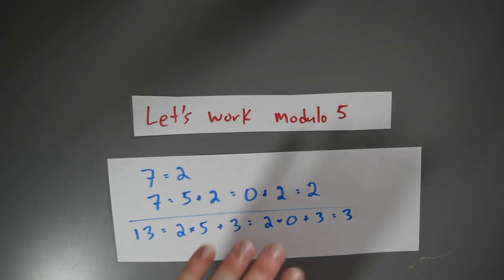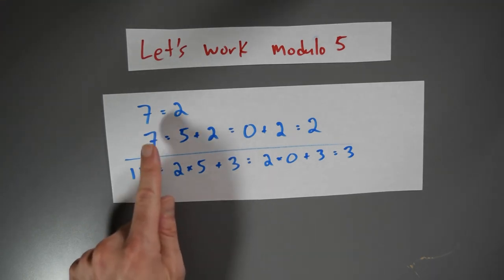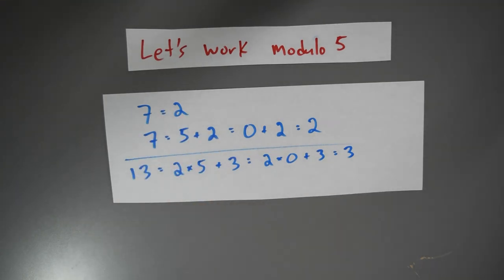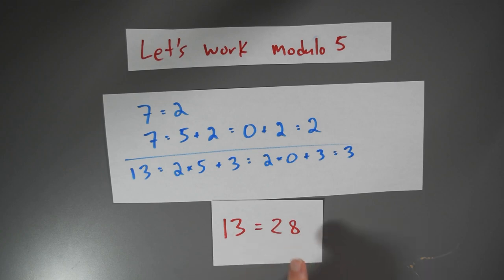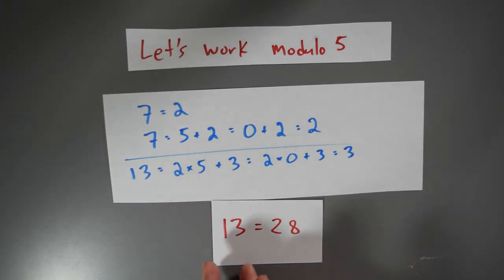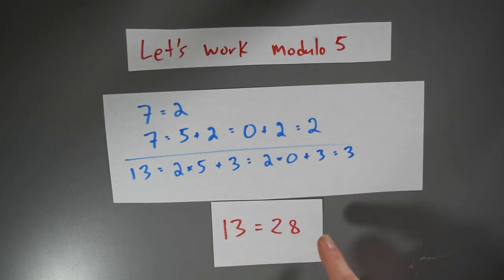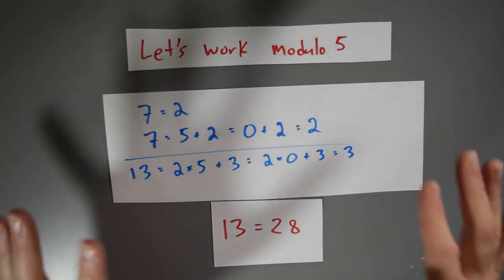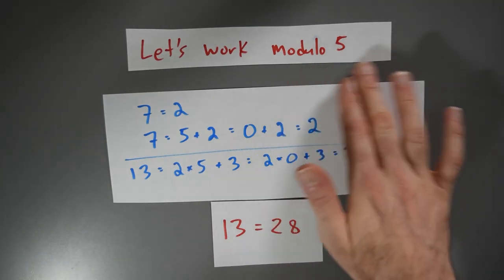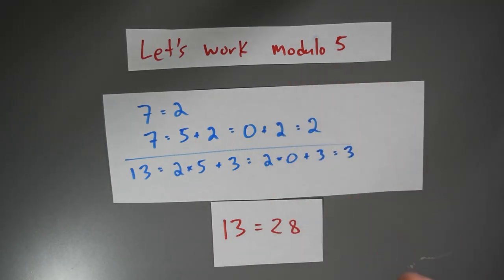Maybe this seems like a distinction without a difference, but there is a difference. If I'm working modulo 5, I not only can say things like 7 is equivalent to 2 or 13 is equivalent to 3 modulo 5. I can also say things like 13 is equivalent to 28 modulo 5. After all, 13 plus 5 plus 5 plus 5 is equal to 28. But that's the same thing modulo 5 as 13 plus 0 plus 0 plus 0. So 13 is the same as 28 modulo 5, if I'm regarding 5 as if it were 0.